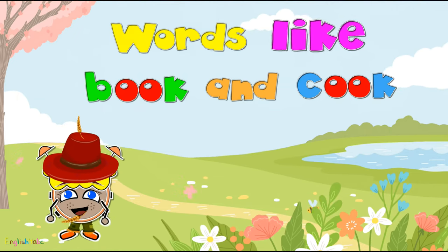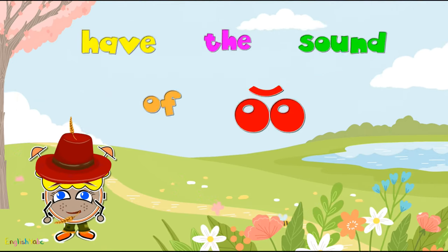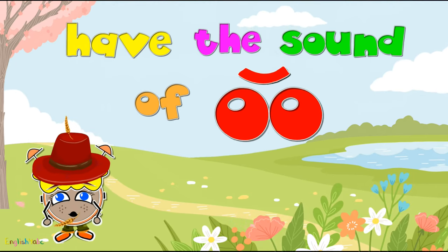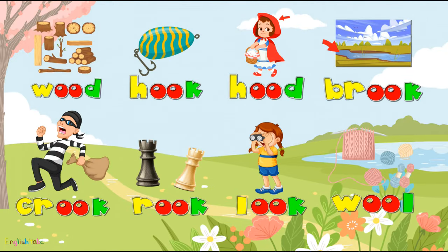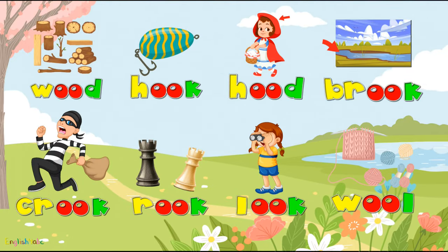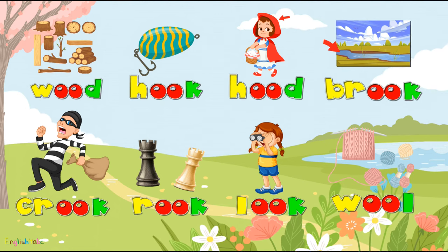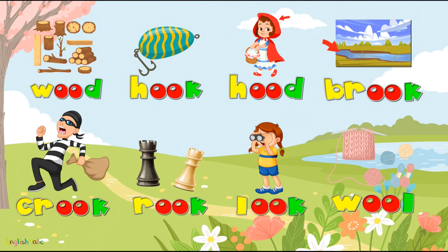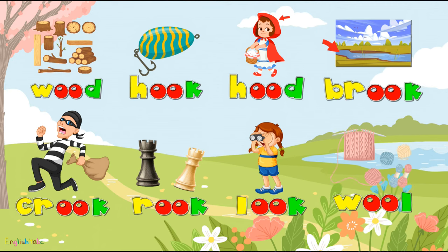Words like 'book' and 'cook' have the sound of oo, oo, oo. Wood, hook, hood, brook, crook, rook, look, wool.